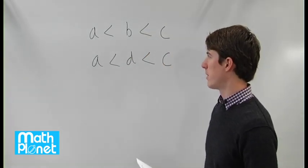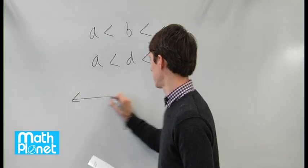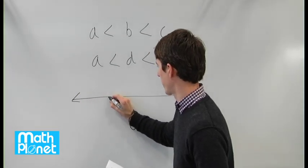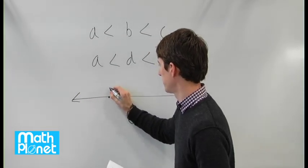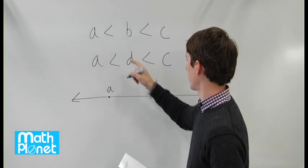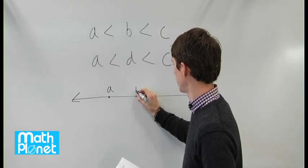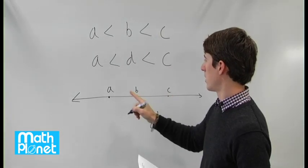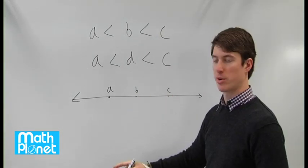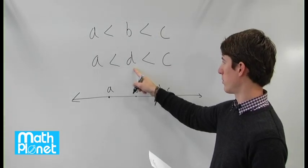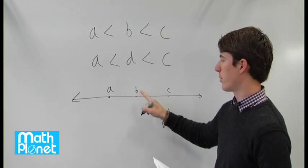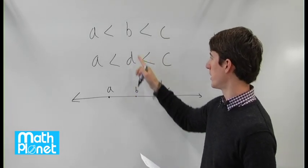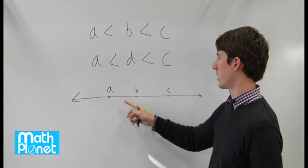So maybe we want to draw our number line, just to make it clear visually. We know that we have A somewhere, and that's less than B, which is less than C. If we draw a similar number line, it will look the same but with D instead of B. So all we know is that B and D are between A and C.